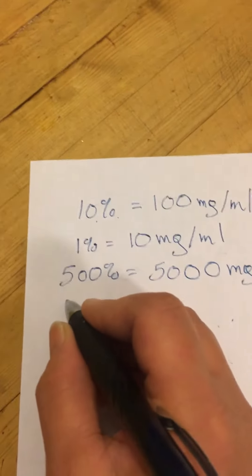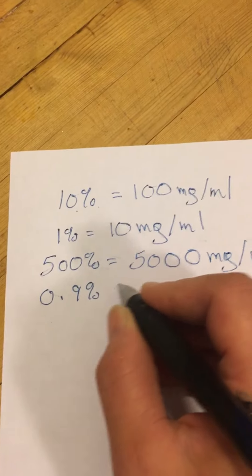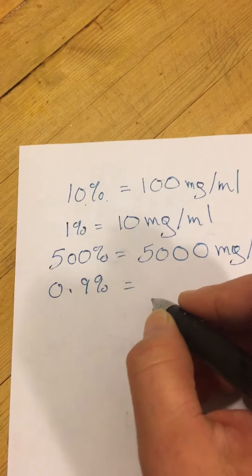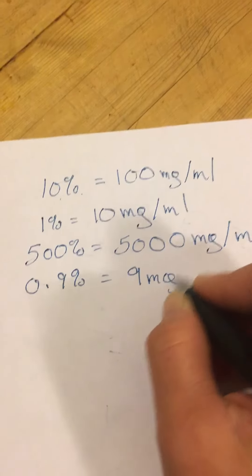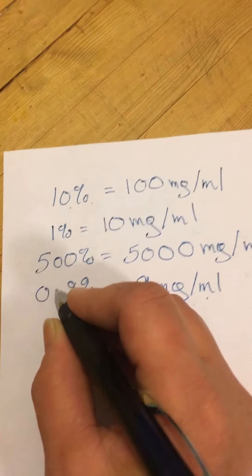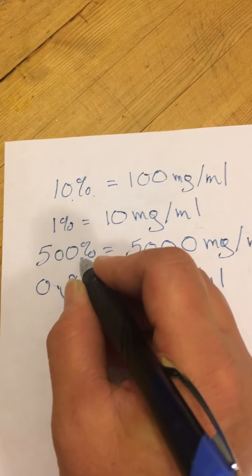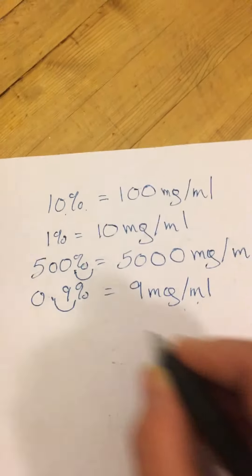A 0.9% solution, such as our sodium chloride we use, is equal to 9 mg per ml. So you're just moving that decimal point over one place each time.